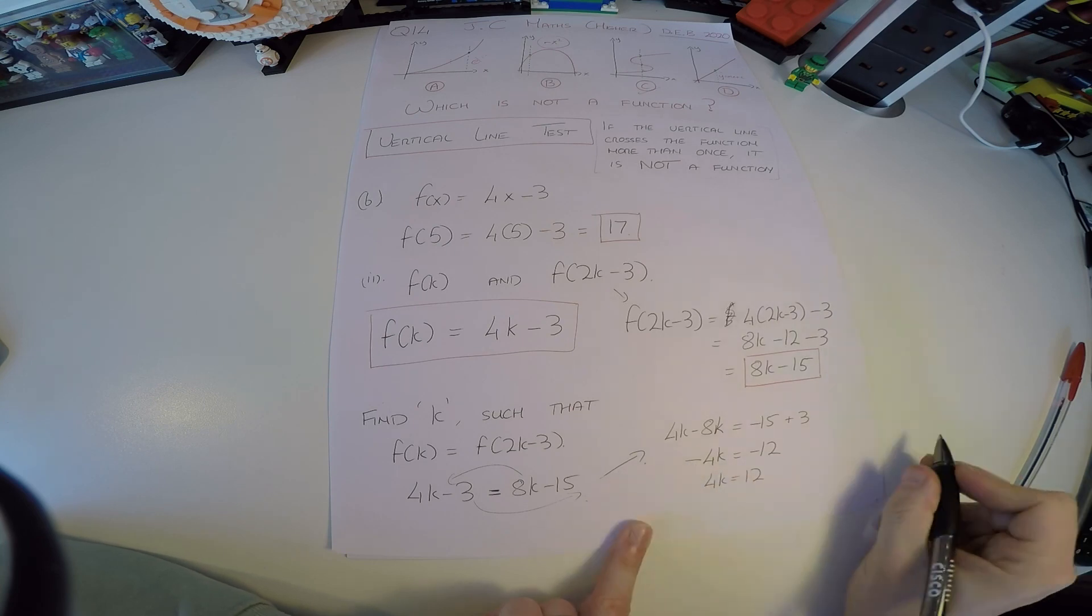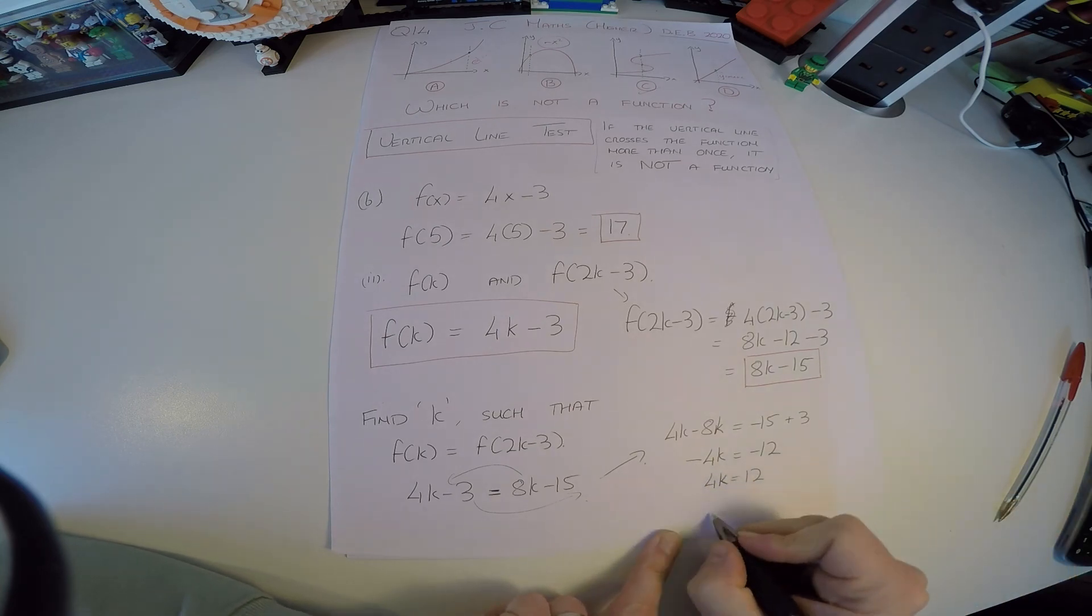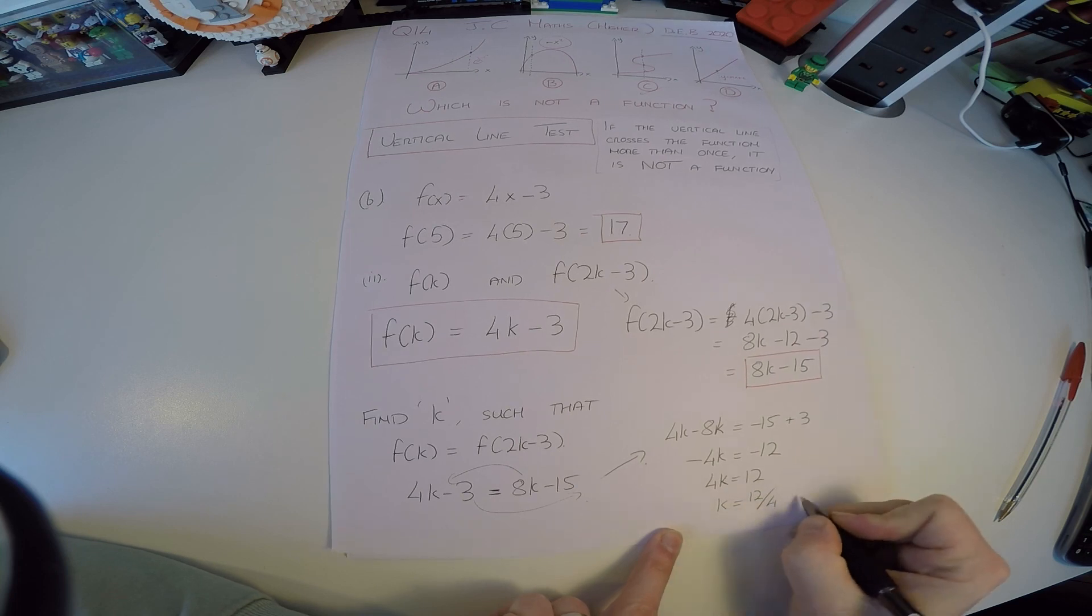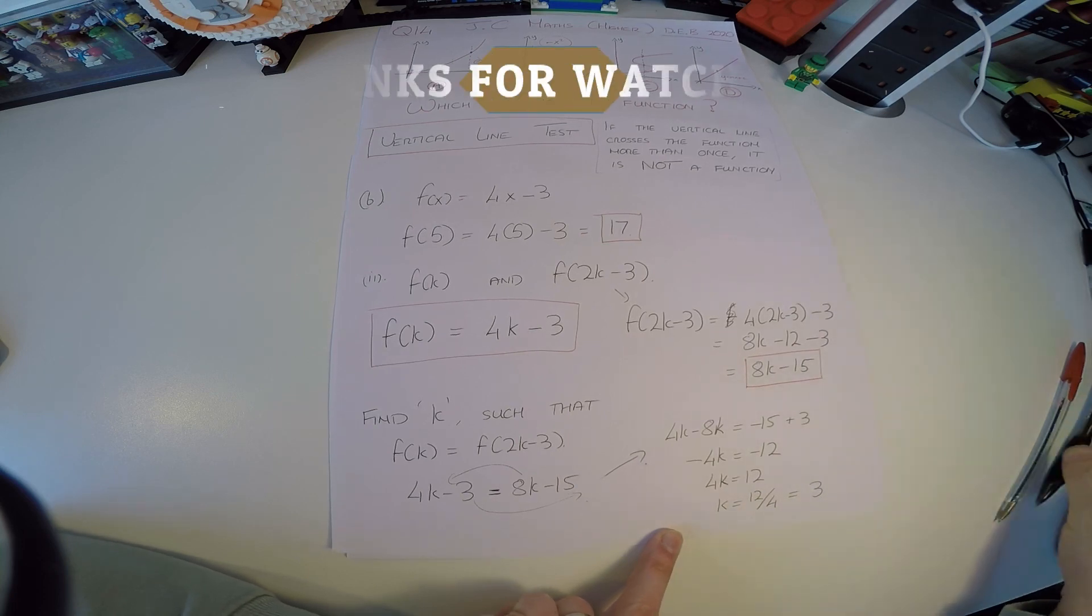4k is equal to 12. Remember, I can change the signs all in one go. So 4k is equal to 12, then k must be equal to 12 divided by 4, which is equal to 3. And that's it.